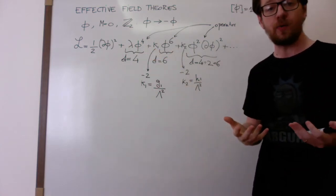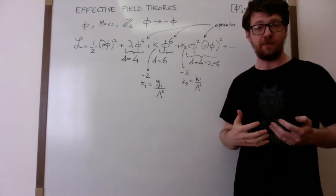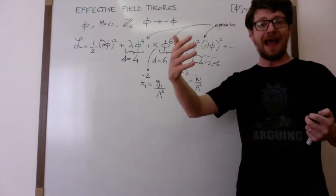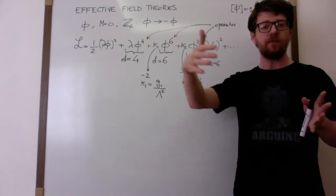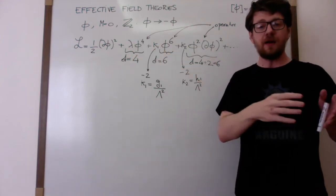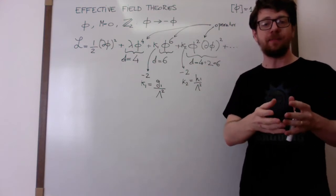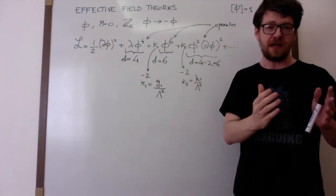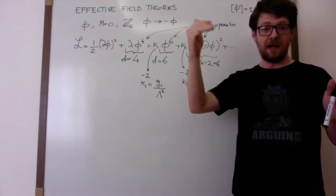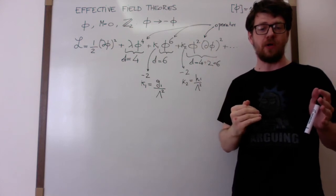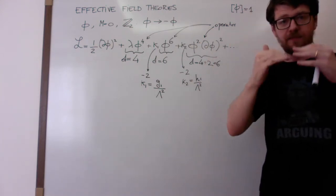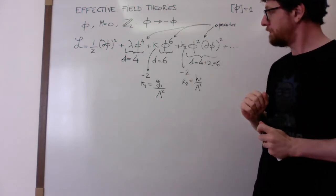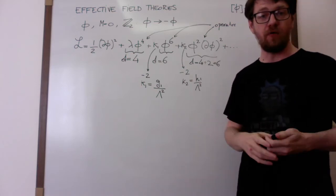In the electrostatic analogy, the long-distance limit corresponds to the low-energy limit in natural units. The lower the energy, the fewer terms that are important. Before demonstrating this, we need to know what the dimensions of our amplitudes are.